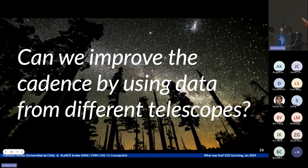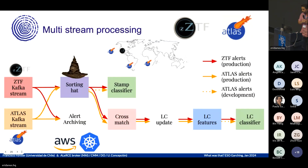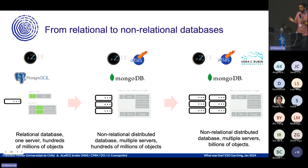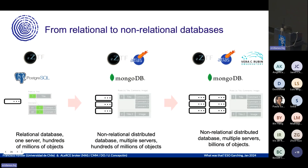Using other telescopes will be very important for Rubin. In the Wide-Fast-Deep survey, the cadence is not ideal, but we can complement with other telescopes. We are doing this with ZTF and ATLAS — ingesting both alert streams and cross-matching in real time. For example, cyan and orange points come from ATLAS, red from ZTF, giving much better light curves when combining surveys. This has led us to move away from relational databases like Postgres to non-relational databases like MongoDB, which I think will also be the future for Rubin.